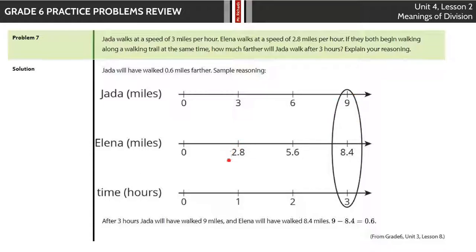Elena went 2 and 8 tenths, times 2, 5 and 6 tenths, times 3, 8 and 4 tenths. And then when we just compare, well, Jada went 9. Elena went 8 and 4 tenths. 9 minus 8 and 4 tenths will get us an answer of 6 tenths miles further.